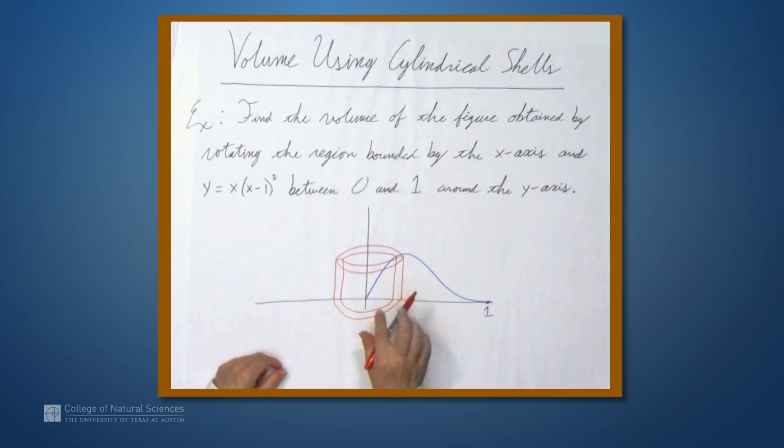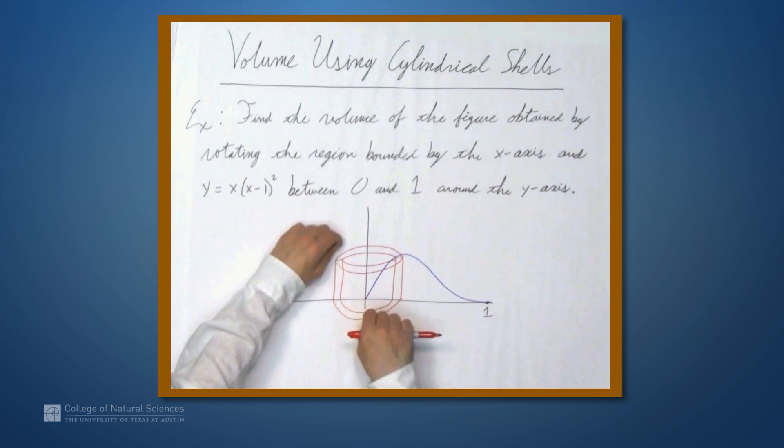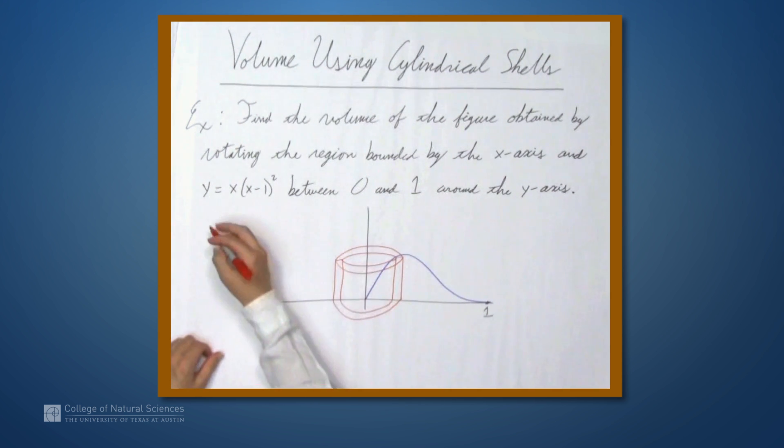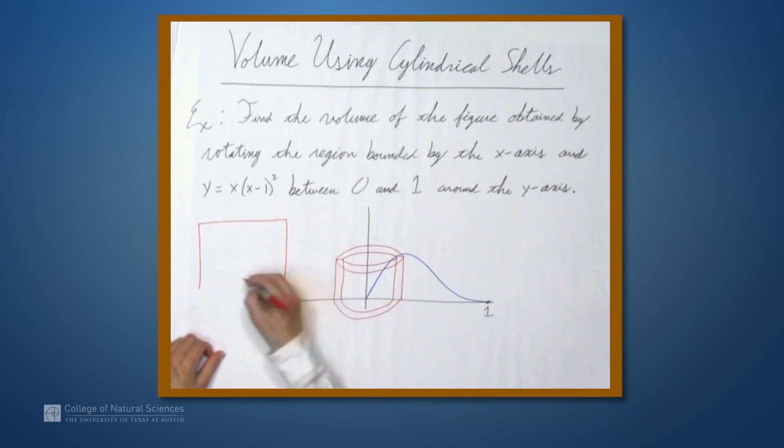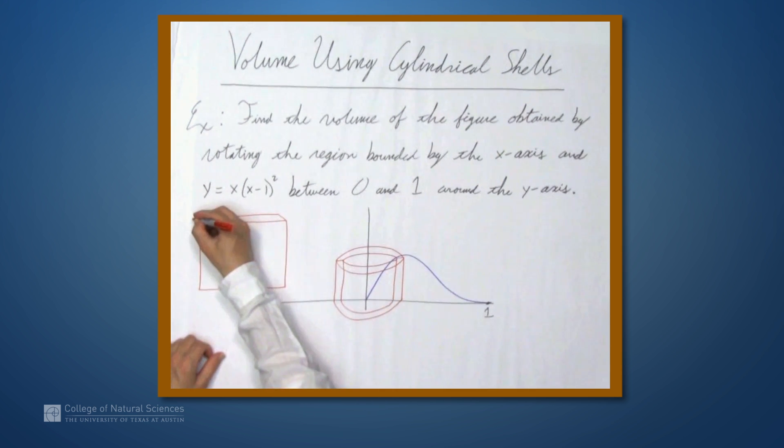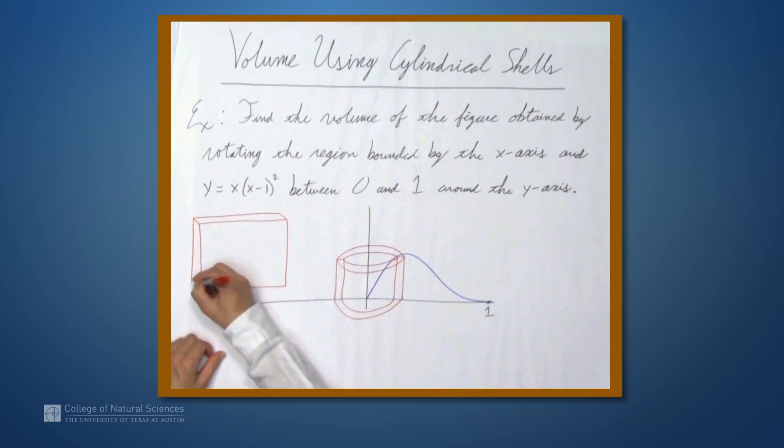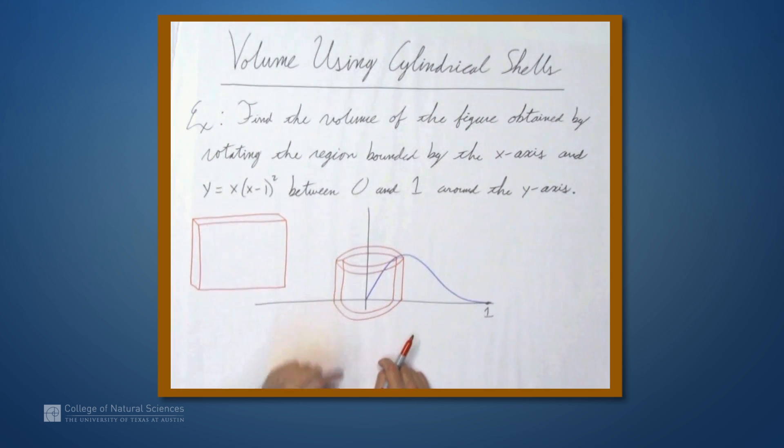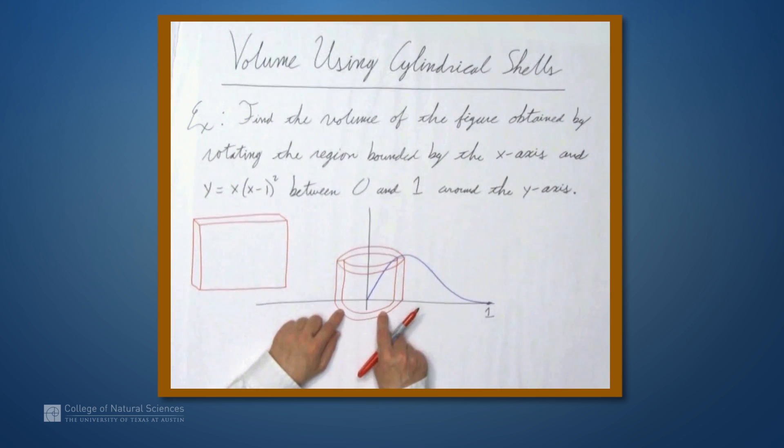The great thing about this is that we can break this apart and end up with actually what is a rectangular solid. Now, this wouldn't work. Well, when I say this wouldn't work, what do I even mean? I want to say that the volume of this rectangular solid is the same as the volume of this cylindrical shell.